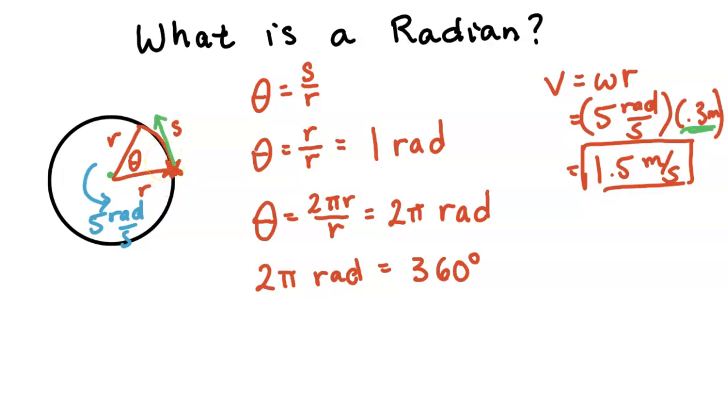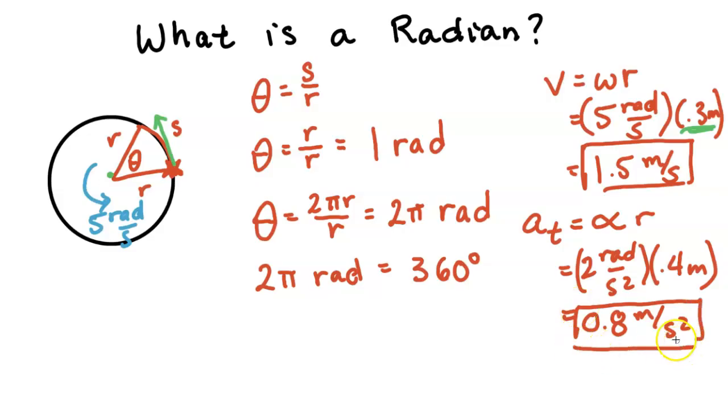Now another reason why we use radians is for the acceleration equation. The tangential acceleration equals the angular acceleration times the radius. Let's say we have an angular acceleration of 2 radians per second squared. We can multiply this and get 0.8 meters per second squared. We would not be able to do these calculations if we were using degrees. To use this equation, you have to be using radians.